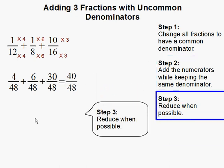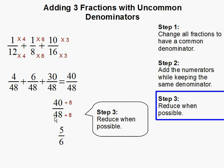Step three: reduce when possible. So 40 over 48 can be reduced — both can be divided by 8. 40 divided by 8 is 5 and 48 divided by 8 is 6. This fraction cannot be reduced any further, so this completes our problem.